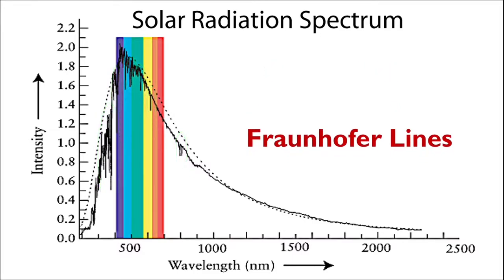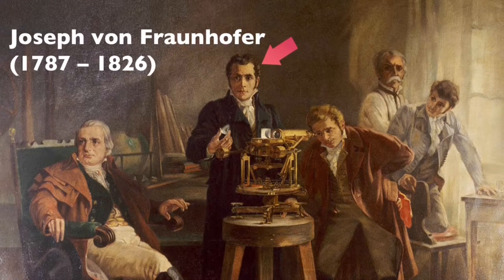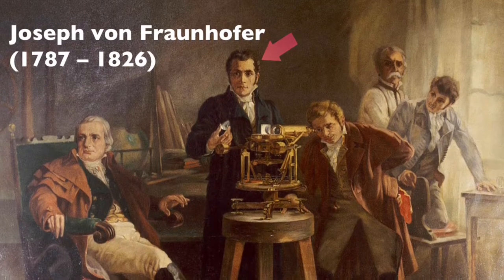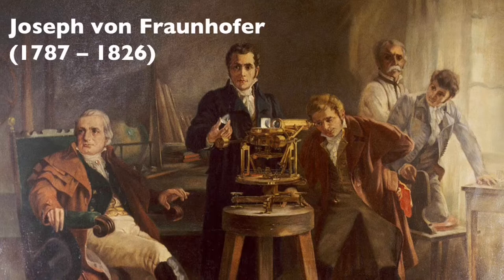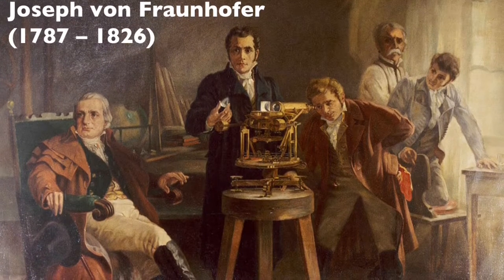These are lines in the absorption spectrum where the observed intensity is less than expected. The Fraunhofer lines are named after Josef von Fraunhofer, a Bavarian physicist and glassmaker who discovered their existence in 1814 by observing and heavily studying these dark absorption bands in the sun's spectrum.